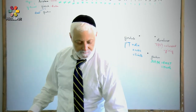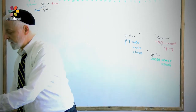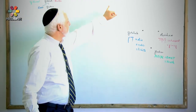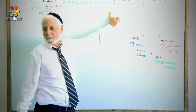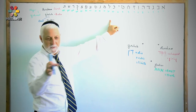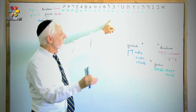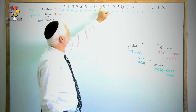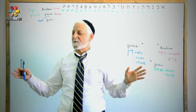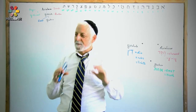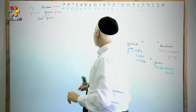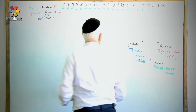Mem really is the middle letter. The reason why it doesn't look like the middle letter on the board is because the final letters of Hebrew weren't included. There's a final chaf, a final mem, a final nun, and so on. When you put the final letters in, mem becomes the middle letter of the alphabet. So that's emet — emet is all part of one truth.